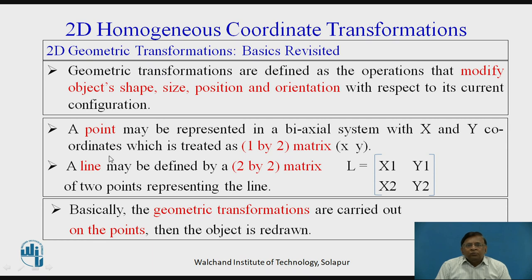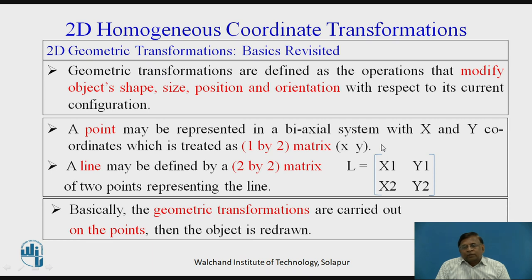And how do we represent points and lines? Basically in geometric transformations, we need graphical features to be represented in matrix form. If we talk of a point, a point is perceived as a 1 by 2 matrix. Talking about a line, a line is perceived as a 2 by 2 matrix. A line passes through 2 points, so x1,y1 and x2,y2 — the combination of these 2 points in matrix form is what we perceive a line to be in geometric transformations.